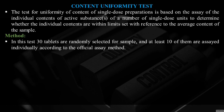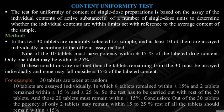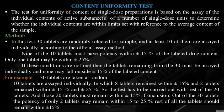Method: 30 tablets are randomly selected. At least 10 are assayed individually according to the official assay method. Nine out of 10 tablets must have potency within ±15% of labeled drug content; only one tablet may be within ±25%. If these conditions are not met, the remaining tablets from the 30 must be assayed individually and none may fall outside ±15% of labeled content. Conclusion: Out of 30 tablets, the potency of only 2 tablets may remain from 15–25%; all remaining tablets must be within ±15%.